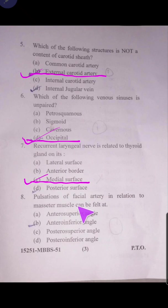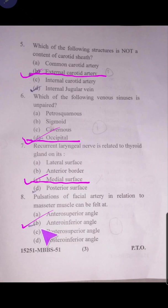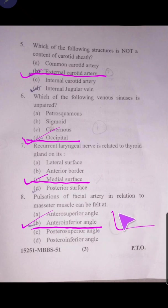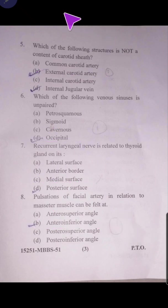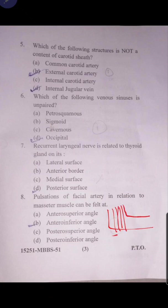Question number eight: pulsations of the facial artery in relation to the masseter muscle can be felt at which angle — anterior superior, anterior inferior, posterior superior, or posterior? The answer is anterior inferior angle. The masseter runs here and the artery climbs up along it — so the pulsations are felt at the anterior inferior angle.